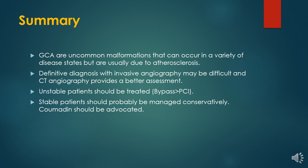Extensive aneurysmal formation may require de-roofing, closure of the coronary artery, and distal coronary artery bypass grafting. A fistula draining the pulmonary artery is best treated by oversewing from inside the pulmonary artery.